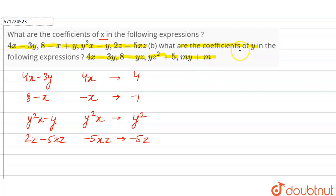Now in the b part, we have to find the coefficient of y. So coefficient of y means first expression is 4x-3y. Here the term which has y is -3y. And the coefficient here is -3.